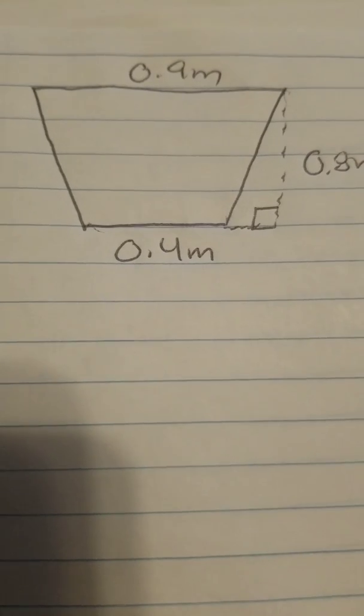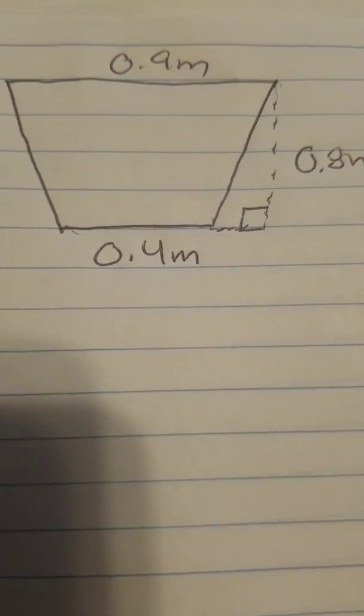So we're going to identify our base 1, base 2, and our height, and then we're going to utilize the formula: area is half of base 1 plus base 2 times the height.